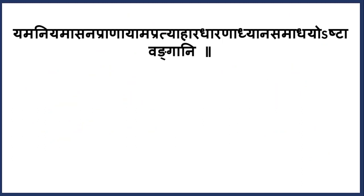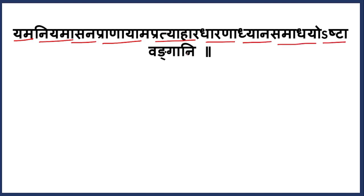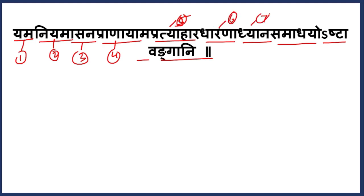Now the next sutra lists what the Yoga Angas are: Yama, Niyama, Asana, Pranayama, Pratyahara, Dharana, Dhyana, Samadhi — Ashtavyangani. If you split the line: Yama — one, Niyama — two, Asana — three, Pranayama — four, Pratyahara — five, Dharana — six, Dhyana — seven, and Samadhi — eight. So there are eight limbs in total.